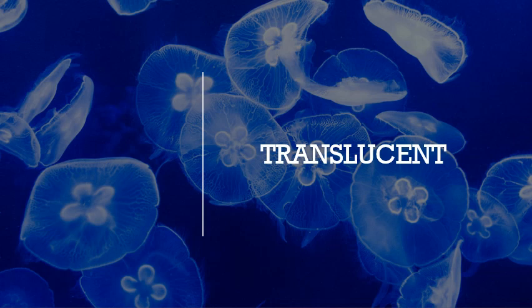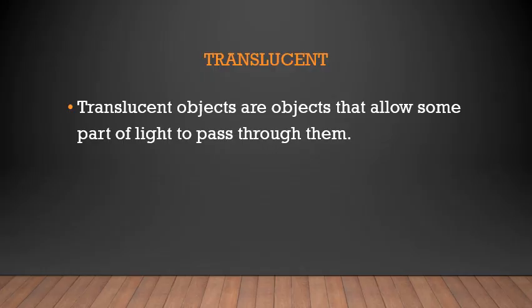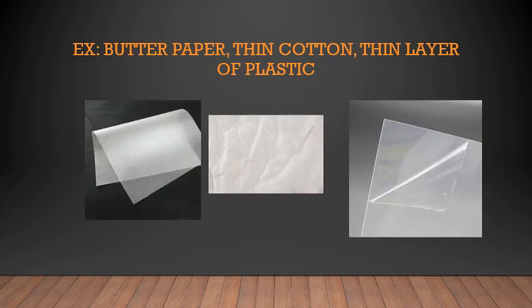Next is translucent objects — T-R-A-N-S-L-U-C-E-N-T. Translucent objects are objects that allow only some part of light to pass through them — not completely. You cannot see what is on the other side clearly. Such objects are called translucent objects. Examples are butter paper, thin cotton, and a thin layer of plastic. You can see through butter paper, but not completely. With thin cotton you can see the light passing through it. Plastic files you must have seen — you can see through them, but not completely.